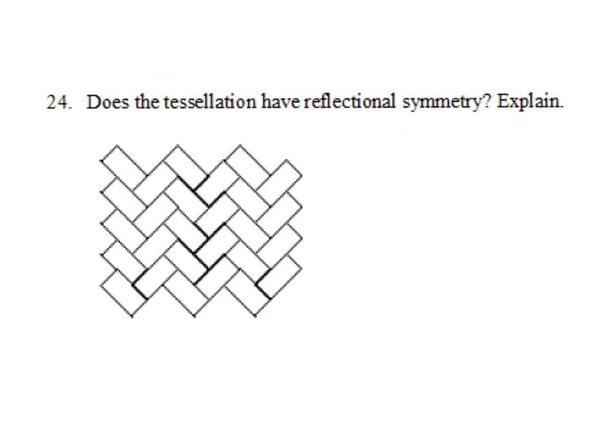Last one, we're looking at a tessellation. Does it have reflectional symmetry? Can I draw a line anywhere in this tessellation and have it fall directly on itself again? Because all of these look like bricks and they're all a little bit staggered, no matter where I put my line of symmetry, I'm not able to get it to fall exactly on itself again. So no, there is no reflectional symmetry.